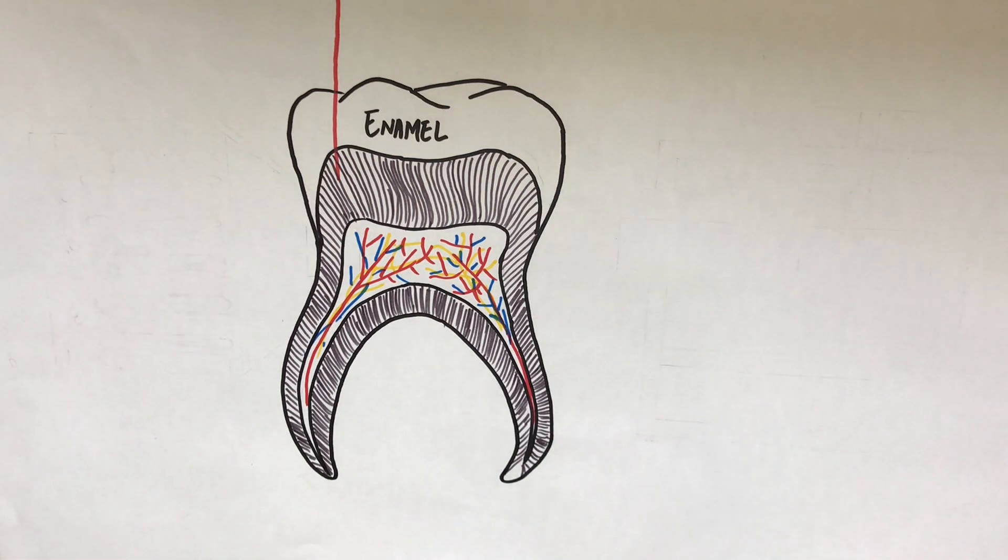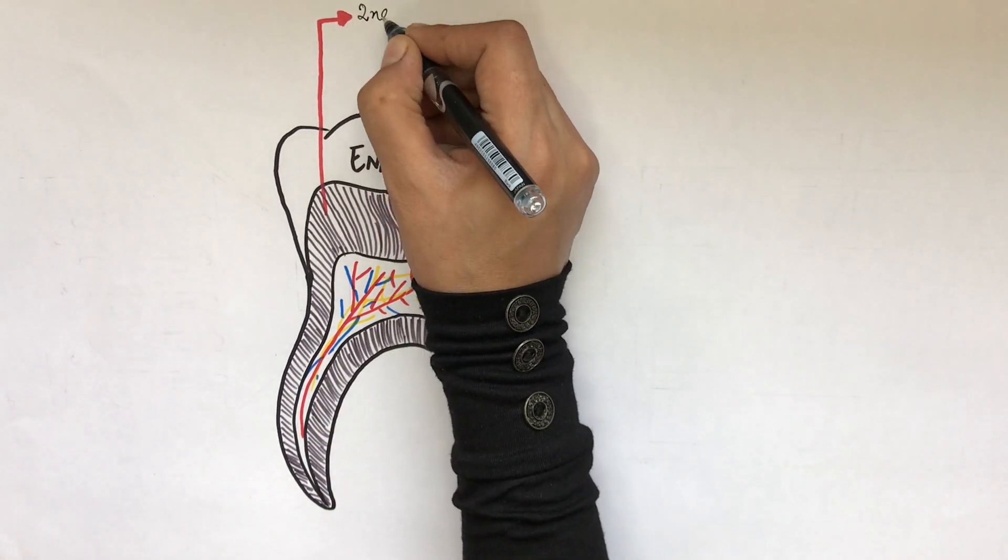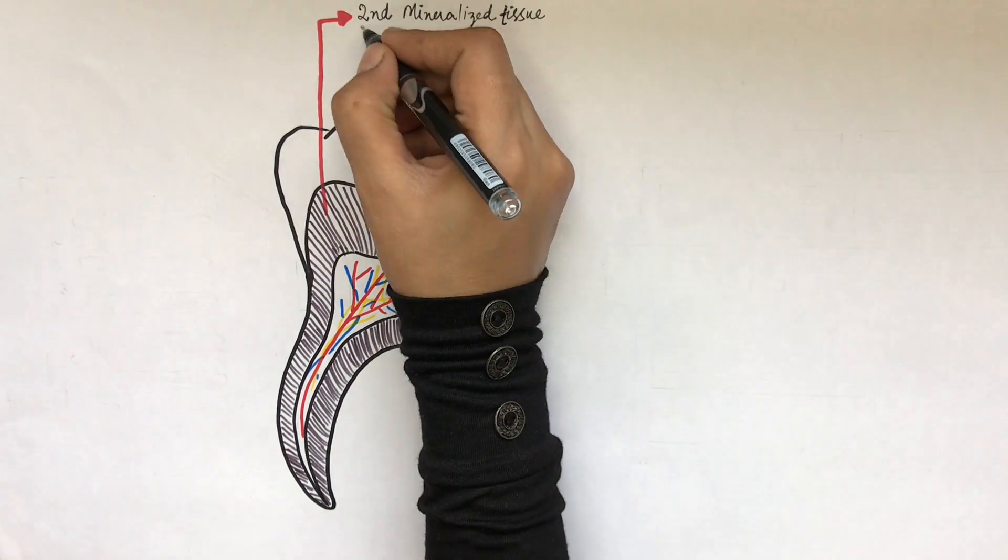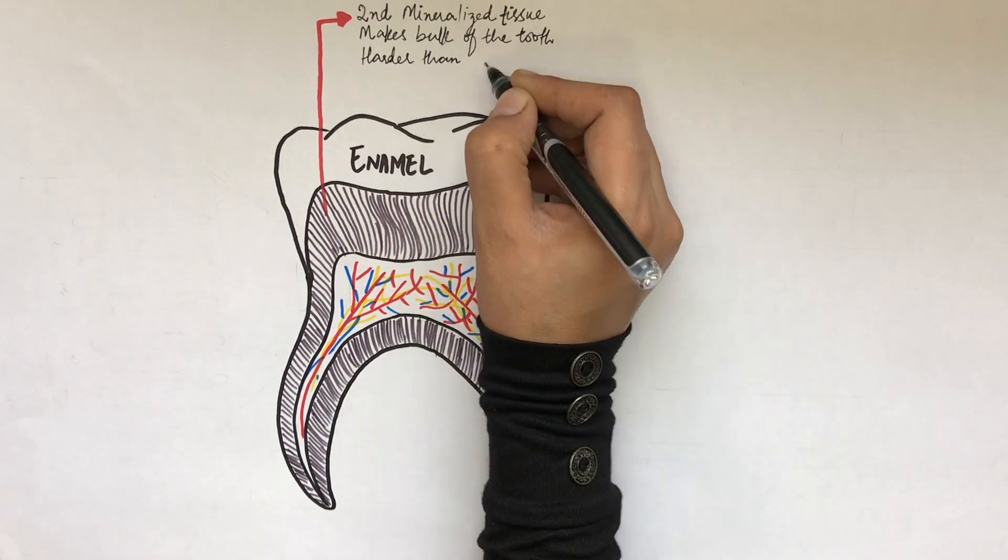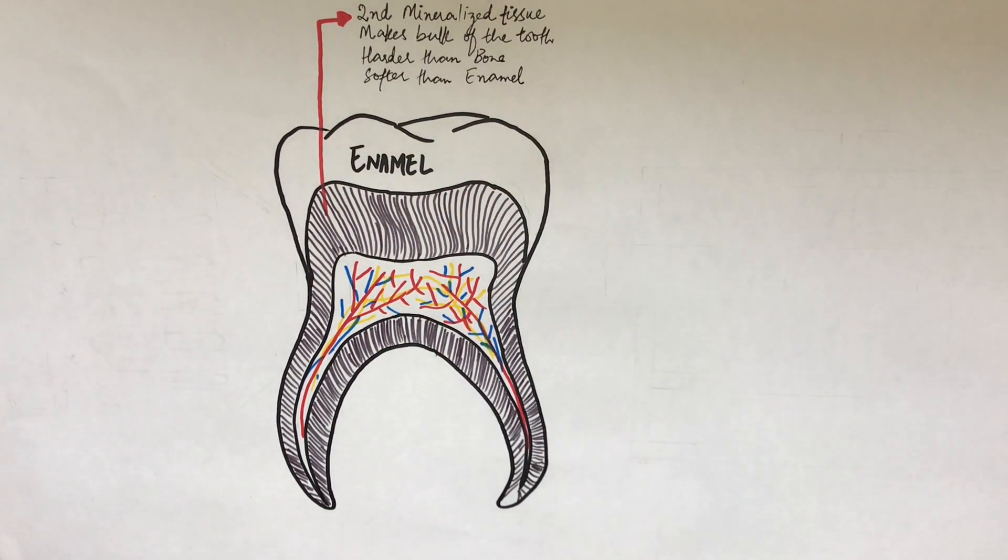Dentine is the second mineralized tissue of the tooth, lying immediately under the enamel, and it makes up the bulk of a tooth. It's harder than bone but softer than enamel.